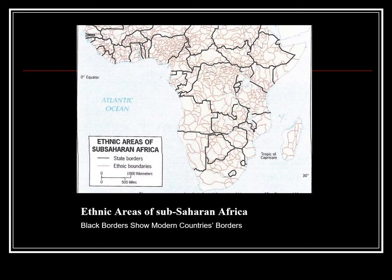Africa's ethnic boundaries were quite different from the countries' boundaries. These illogical boundaries drawn after the Berlin Conference in 1884 would lead to problems with civil wars and border disputes during and following decolonization.